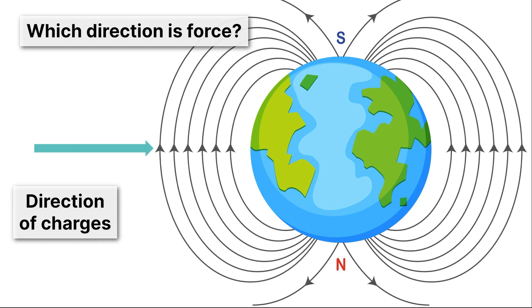Were you able to get it? Take your pointer finger, point it in the direction of charges, so it's going to be pointing towards the right, and it's going to be pointing towards the Earth. Now take your middle finger, and it needs to point up the direction of the magnetic field. Then your thumb should be pointing away from the screen, and that's the direction of the force, out of the screen. Again, if you're struggling with this right-hand rule, just repeat the last five minutes a few times, and practice a couple times, and you'll get it down.